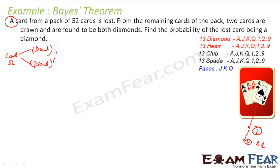When you have 52 cards and lose one, it may be a diamond or it may not be a diamond — two scenarios. The probability it is a diamond is 13/52 = 1/4 since there are 13 diamonds in 52 cards. The probability it is not a diamond is 1 − 1/4 = 3/4.